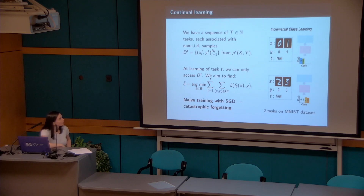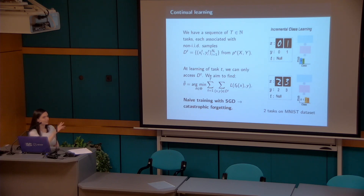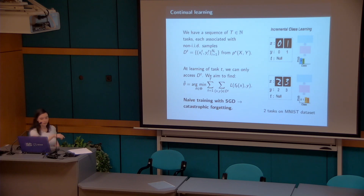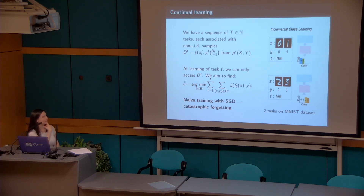I also include an example on the MNIST dataset with a continual learning problem involving two tasks. The first task is to classify zeros and ones, and the second task is to classify twos and threes. At the end, with the same model, we want to classify all four classes correctly. The problem is that if we learn only on the second task without access to the first one, we end up with optimal parameters only for the second task.